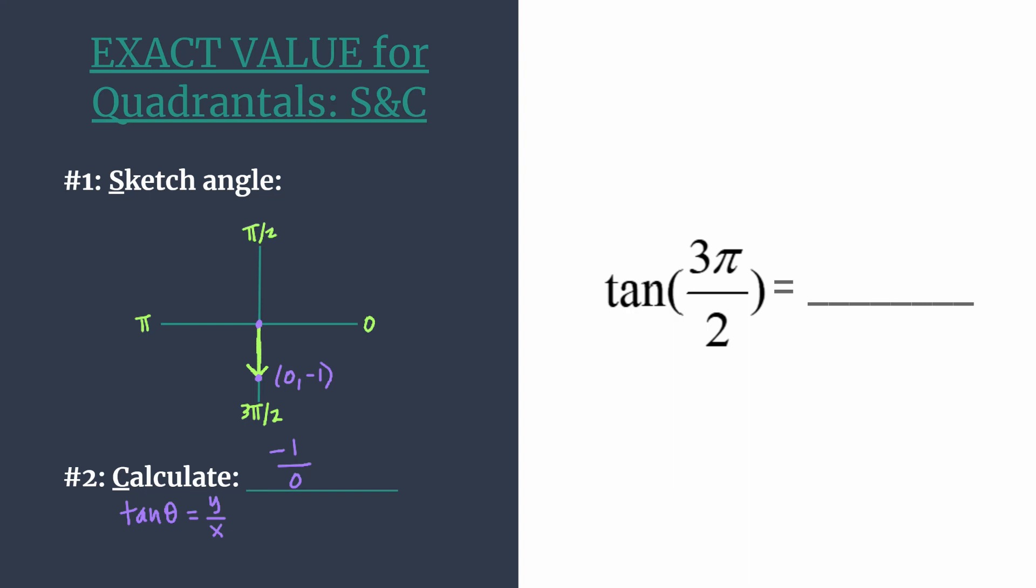So the tangent of 3 pi over 2 is going to be undefined, or u-n-d to abbreviate. If you are familiar with the graph of tangent, you know that when an exact value is undefined, we'll actually see a vertical asymptote there. That's a nice connection to make as well.